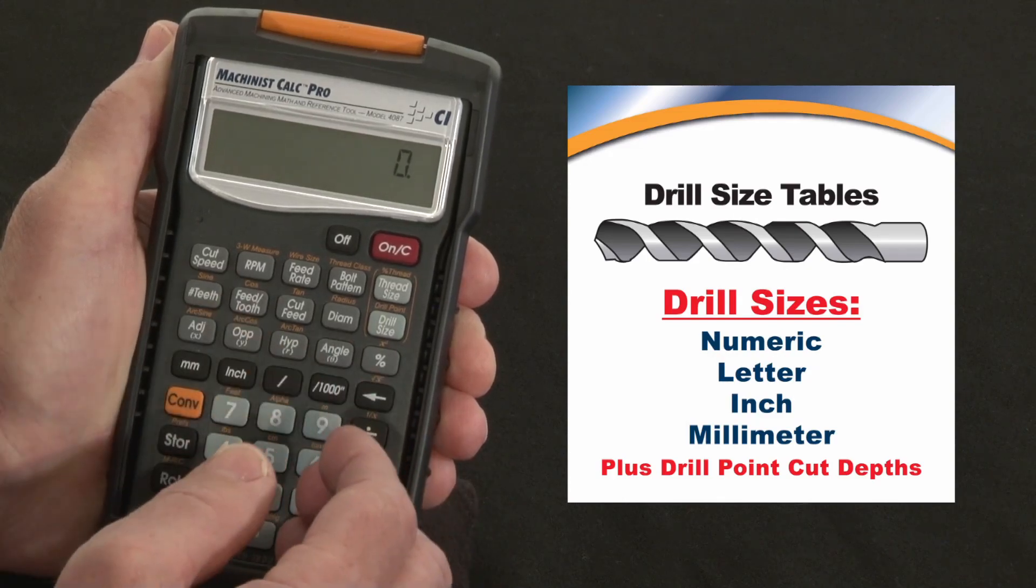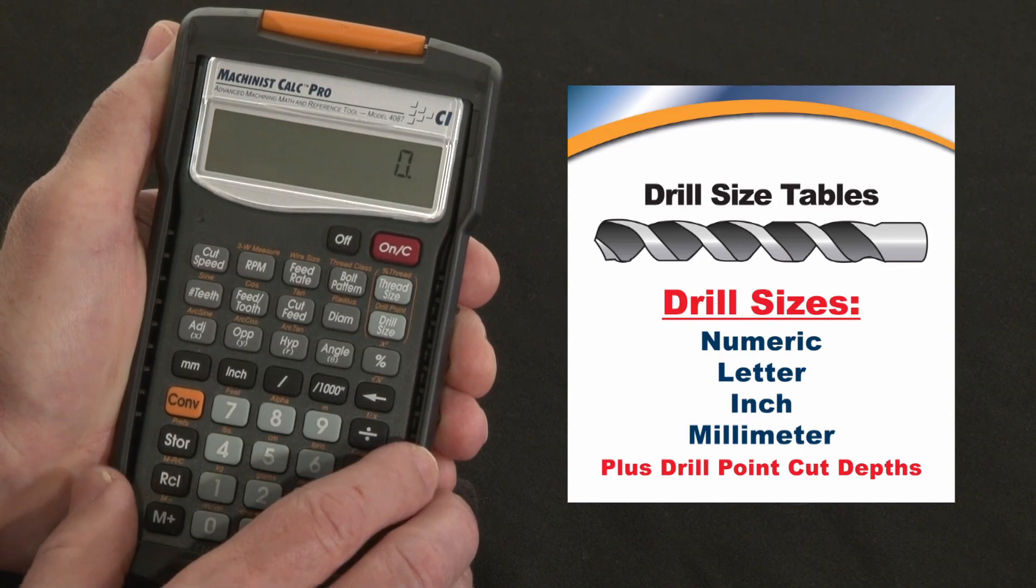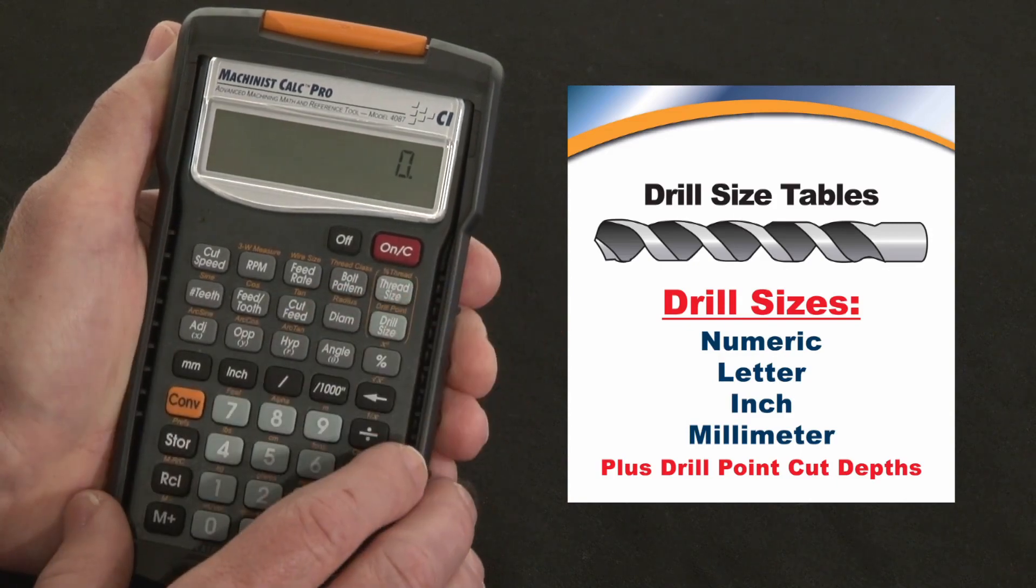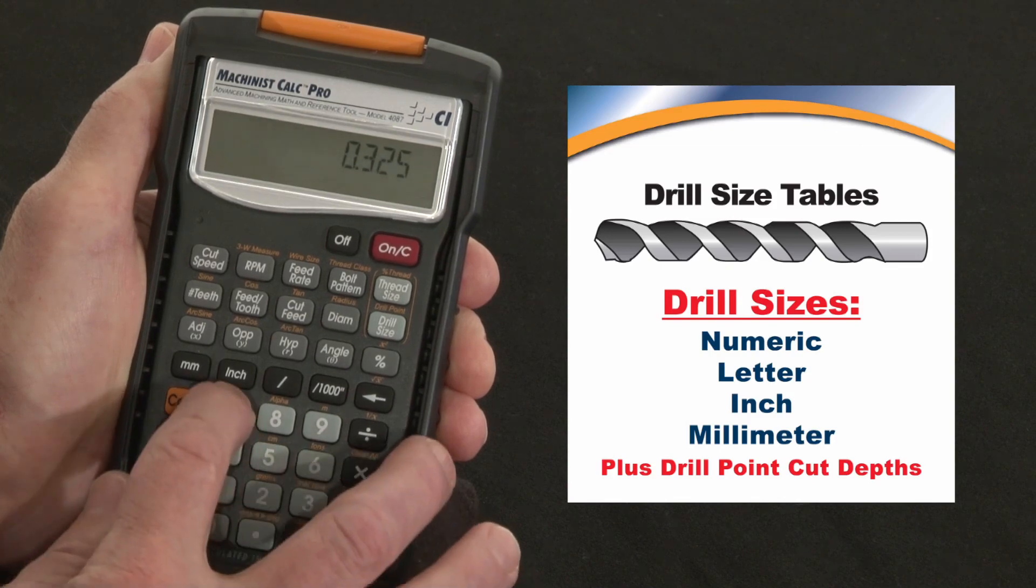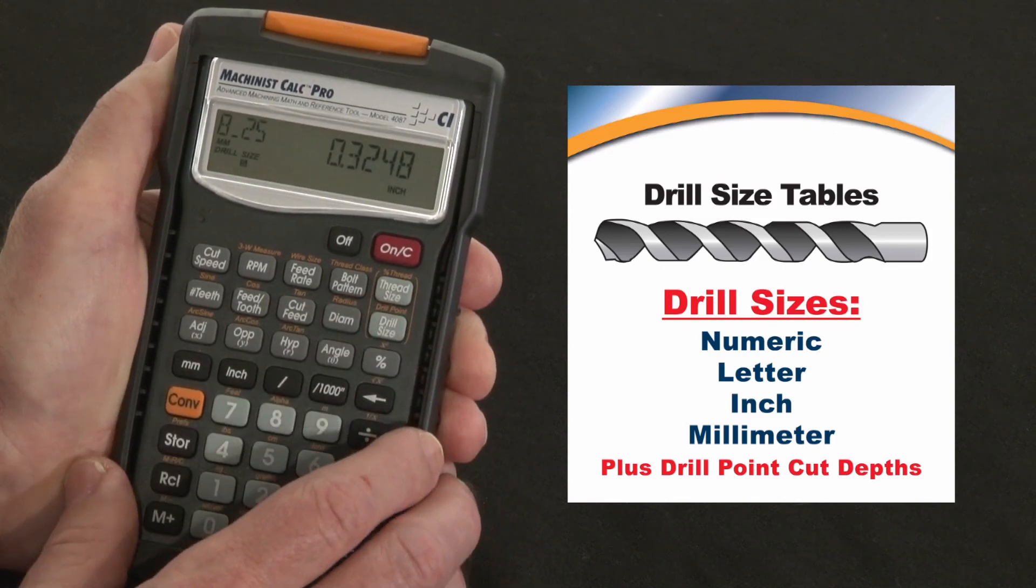You can put in numeric sizes, letter or alpha sizes, fractional sizes, or millimeters. Say the plan you're working on needs a hole 0.3257 diameter. What's the drill size for that?